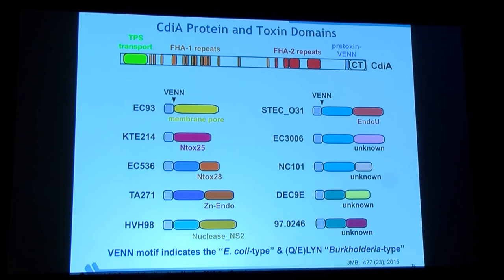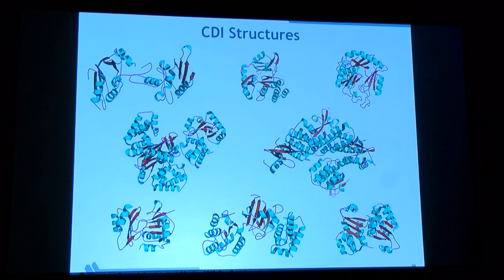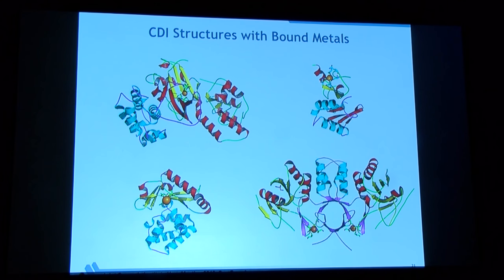The toxin and immunity protein are cognate — they recognize each other specifically. Toxin activities include DNases, RNases targeting messenger RNA, ribosomal RNA, or tRNA, and pore forming. Some are quite sophisticated: we found four that contain metal ions such as zinc and appear linked to metal sensing, possibly involved in other processes as well.